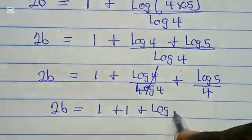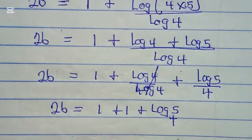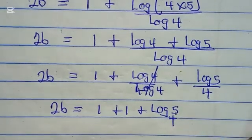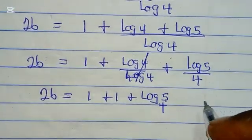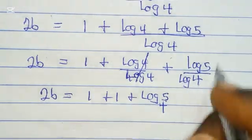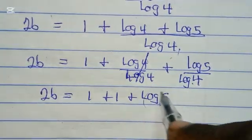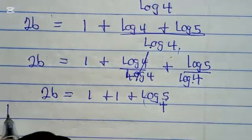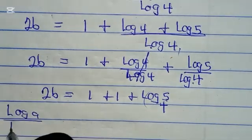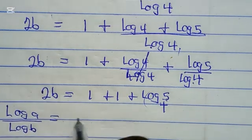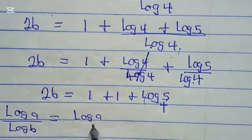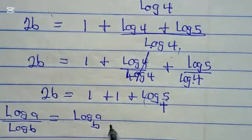Plus log 5 base 4. How did I get log 5 base 4? Using this property: log a divided by log b is the same as log a base b.